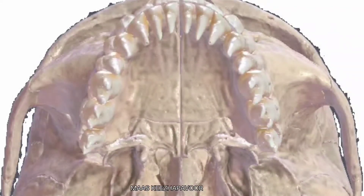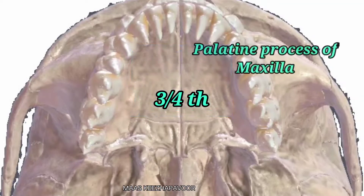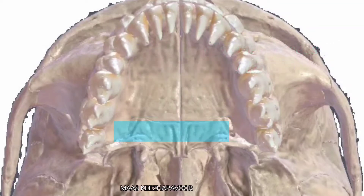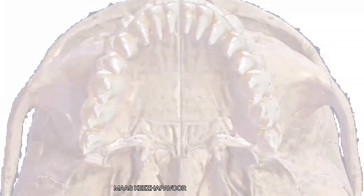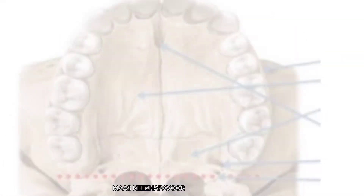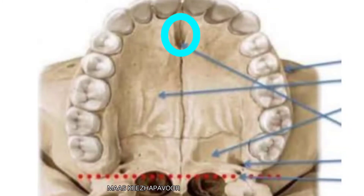The anterior three-fourths of the hard palate is formed by the palatine process of maxilla, and the posterior one-fourth is formed by the horizontal plate of the palatine bone. In the midline anteriorly, the hard palate shows the incisive fossa.